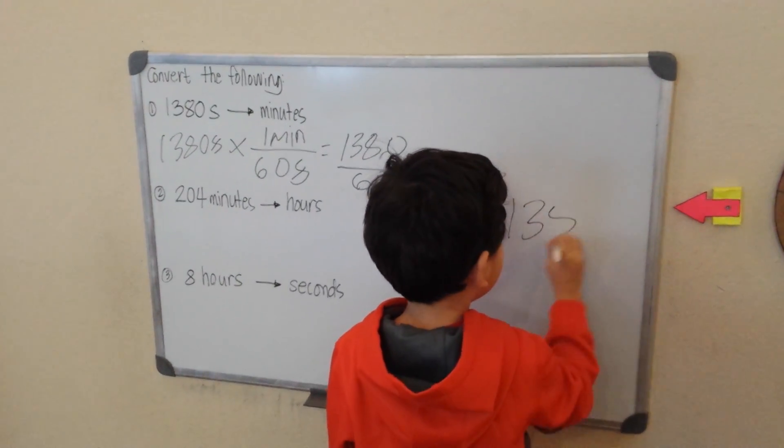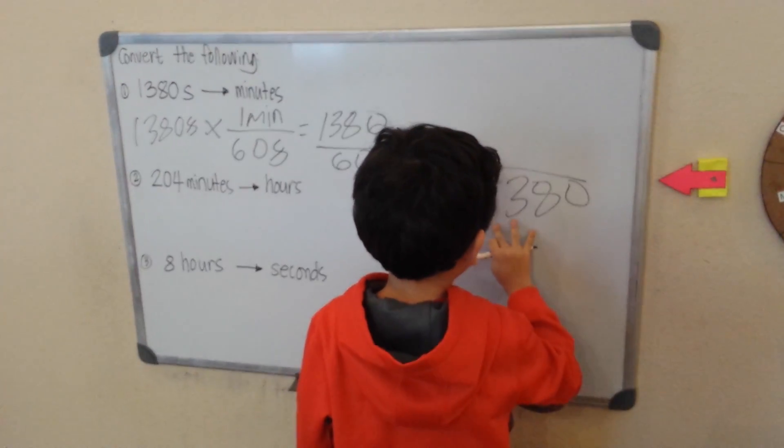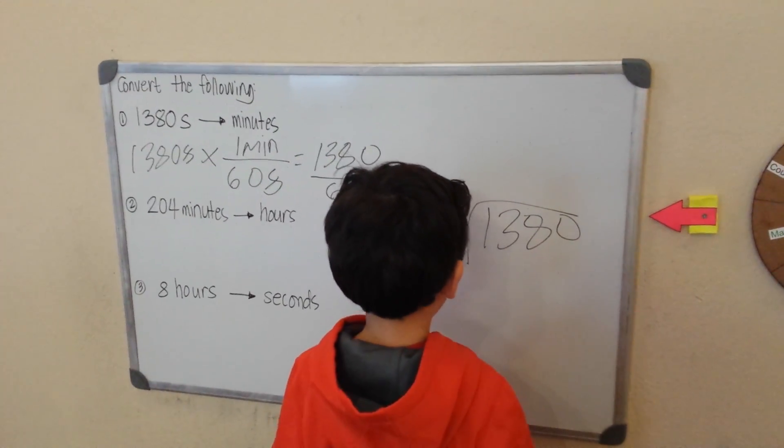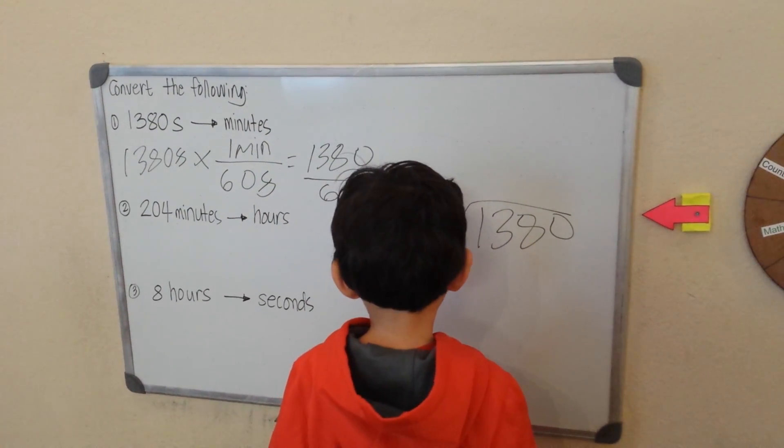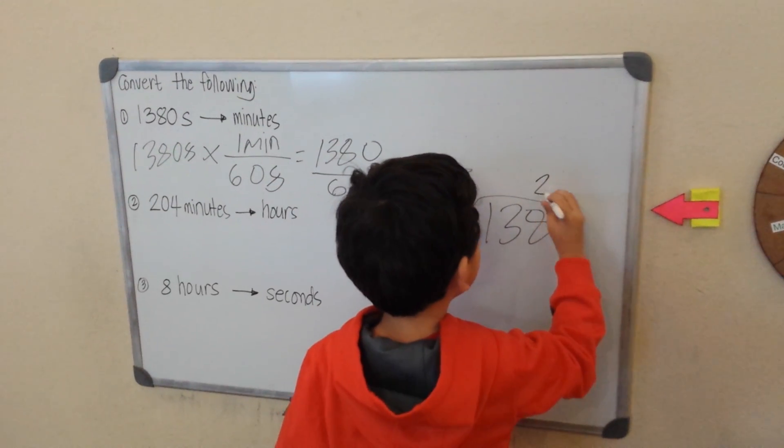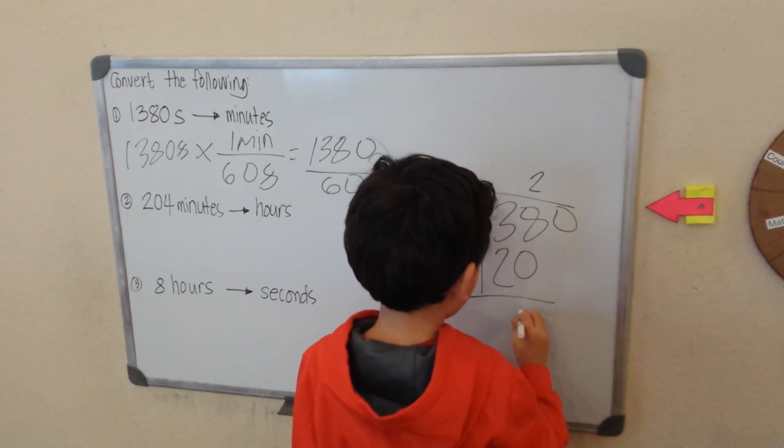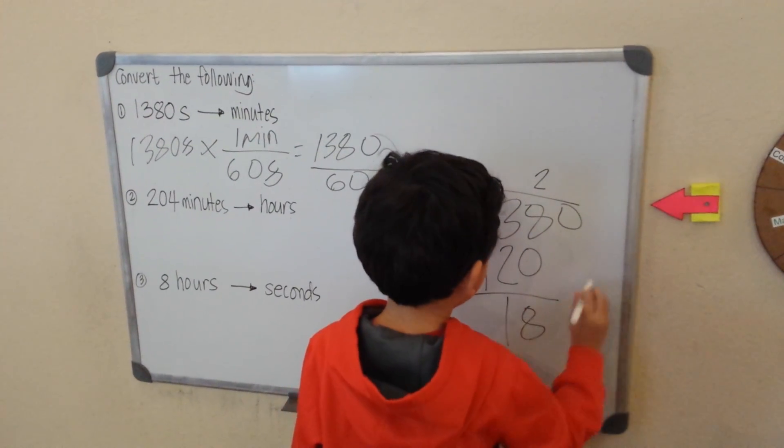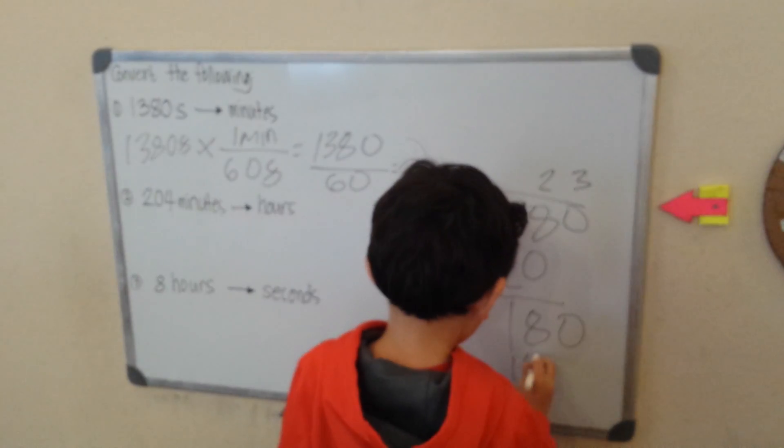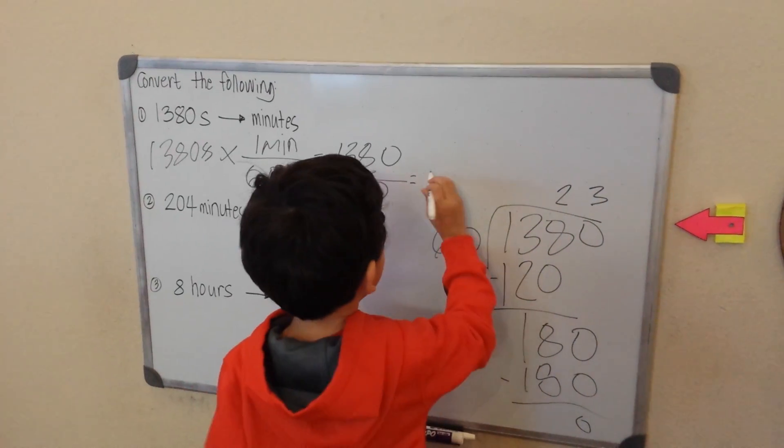Let me check. So let's use three digit numbers. Here's six. That will be 60, 120. That will be two. Two times 60 is 120. So, that will be eight, then one. 180, that will be three. Three times 60 is 180. 180 minus 180 is zero. So, 23 minutes.